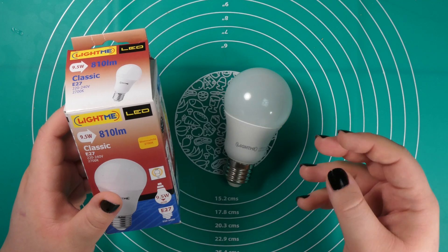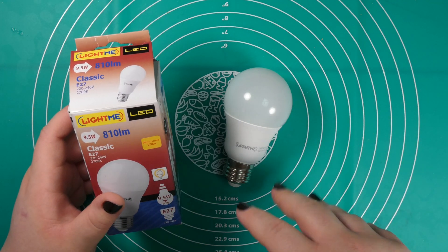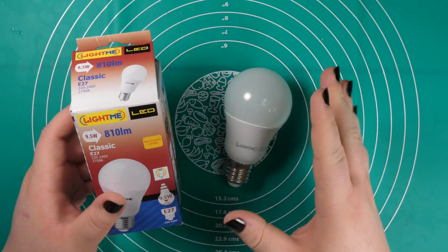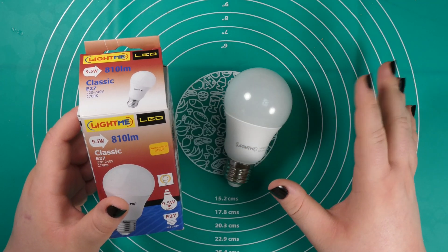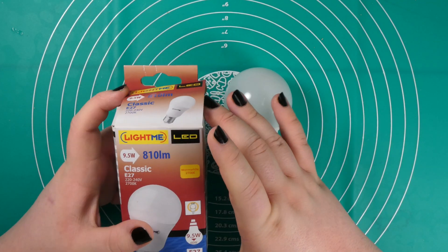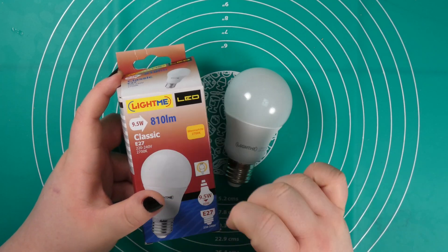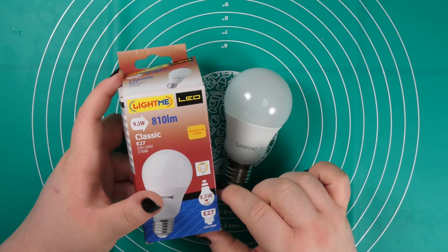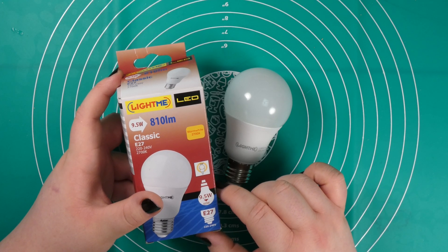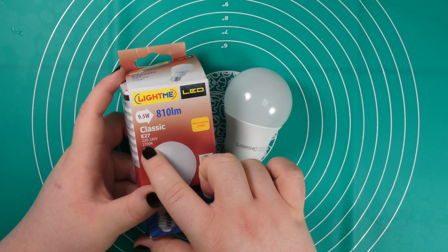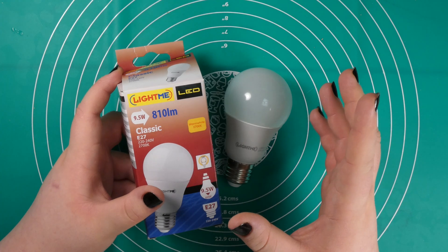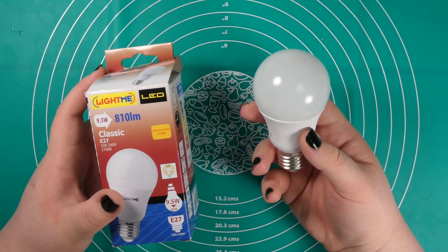But this one does not work and I would like to take a look inside and see why it stopped working. It wasn't like it didn't turn on, it was turned on and the light just stopped. This is from the company Lightme, it's an LED light bulb 9.5 watt, 810 lumen.